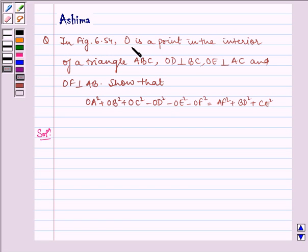In figure 6.54, O is a point in the interior of a triangle ABC, OD is perpendicular to BC, OE is perpendicular to AC, and OF is perpendicular to AB. Show that OA² + OB² + OC² - OD² - OE² - OF² = AF² + BD² + CE².